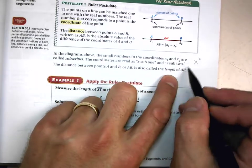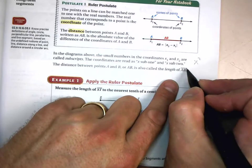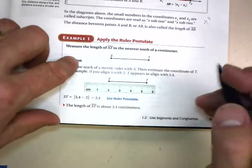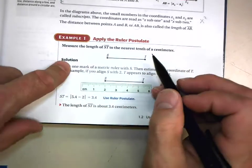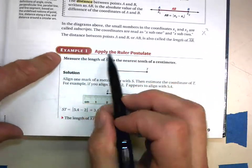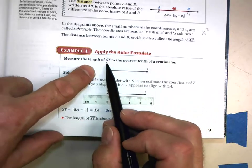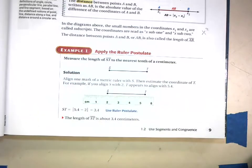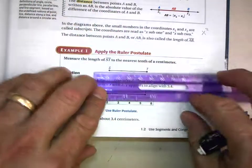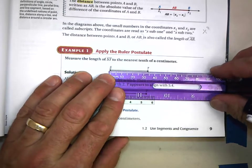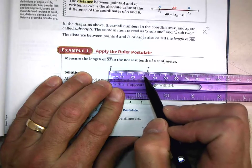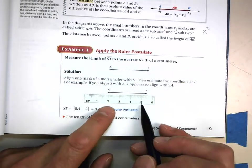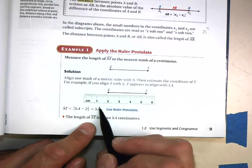Example 1: Apply the Ruler Postulate. Measure the length of segment ST to the nearest tenth of a centimeter. I can pull out my ruler, make sure you start on zero. It's 35 millimeters, which would be 3.5 centimeters. They got 3.4, so I was close.